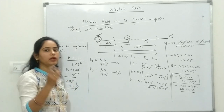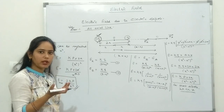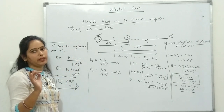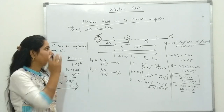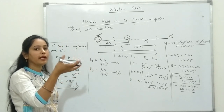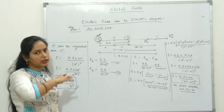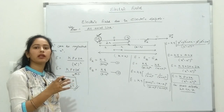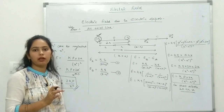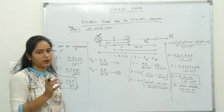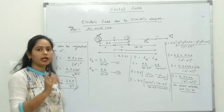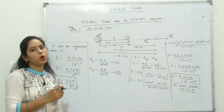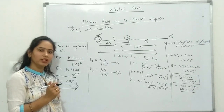Toh aaj aapne dekha: electric field due to multiple charges, electric dipole ki definition, dipole moment, aur electric field due to electric dipole at axial point (E = 2kP/x³). Next lecture mein padhenge: electric field due to electric dipole at equatorial point, dono ke beech relation, aur electric dipole in uniform electric field — jab hum dipole ko uniform electric field mein rakhte hain tab kya hota hai. Agar lecture achi lagi toh channel subscribe karo aur friends ke saath share karo. Thank you!